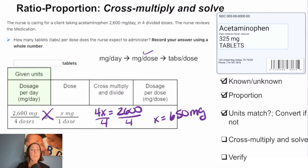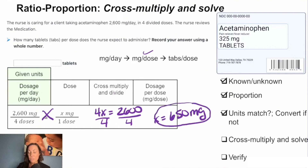But we still have to do another proportion. Remember those steps — you go back and forth between setting up proportions and solving for it until you get to your desired unit. So next, we're going to take this 650 milligrams to figure out how many tabs per dose, and we're going to set up one more proportion.